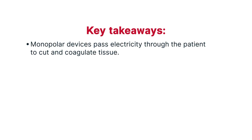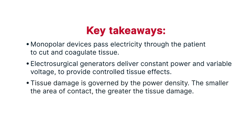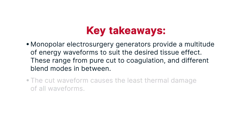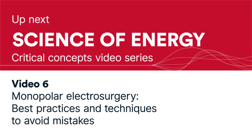Key takeaways: Monopolar devices pass electricity through the patient to cut and coagulate tissue. Electrosurgical generators deliver constant power and variable voltage to provide controlled tissue effects. Tissue damage is governed by power density — the smaller the area of contact, the greater the tissue damage. Monopolar electrosurgery generators provide a multitude of energy waveforms ranging from pure cut to coagulation and different blend modes in between. The cut waveform causes the least thermal damage of all waveforms. New users of monopolar should start with a lower power setting, then increase as needed. In the next video, we will review monopolar electrosurgery best practices and techniques to help you avoid mistakes.